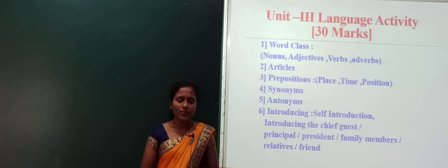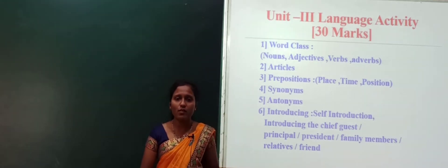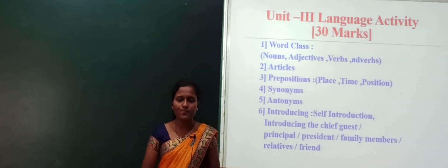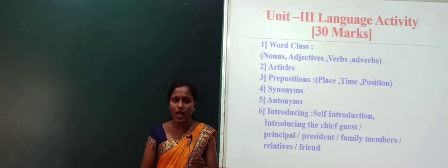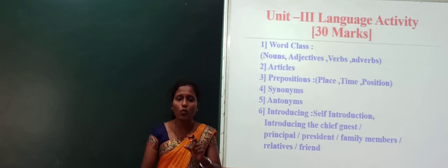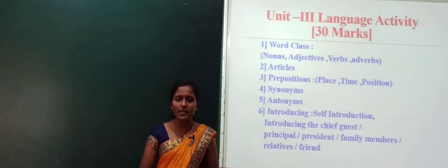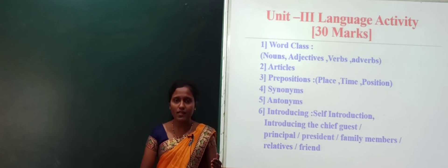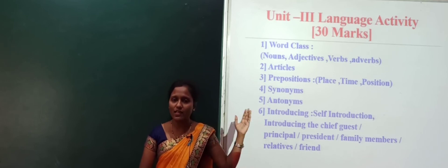Unit third is language activity. This language activity contains 30 marks. In this grammar session, what you are going to learn? First, word class. In word class you will study nouns, adjectives, verbs and adverbs. There are eight parts of speech total, but you'll study these four in the word class manner. Second, articles. You already studied articles in high school and PUC. Definite article and indefinite article, how to use articles. Third, prepositions. Prepositions indicate place, time and position.